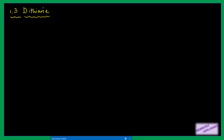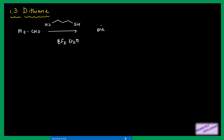These 1,3-dithianes can be prepared by a method similar to the formation of an acetal. For example, suppose I have an aldehyde and I am using 1,3-dithiol in the presence of acidic conditions — it will form this 1,3-dithiane. The reaction mechanism is almost similar to the formation of an acetal.